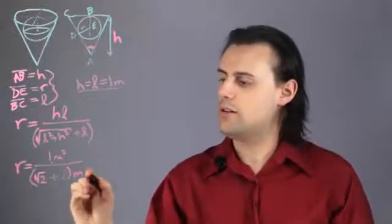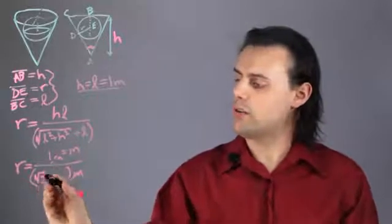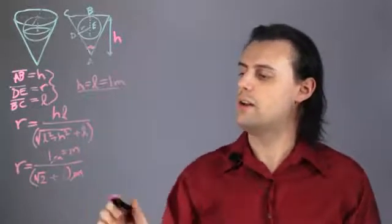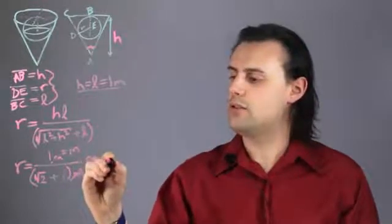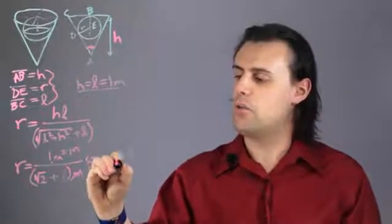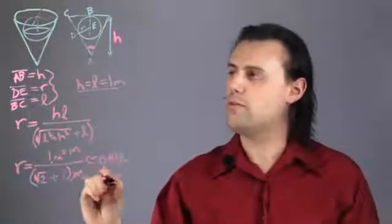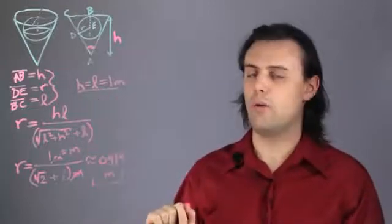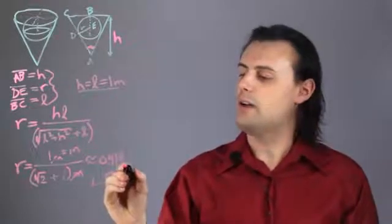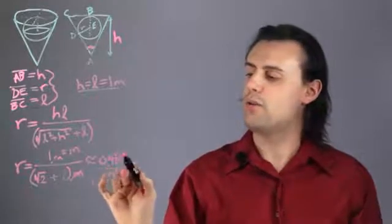My meter squared cancels out with meters, and I'm left with 1 over the square root of 2 plus 1 meters. And this is approximately equal to 0.414 meters. So for a right cone with a height equal to 1 meter, I will end up with a radius of approximately 0.414 meters.